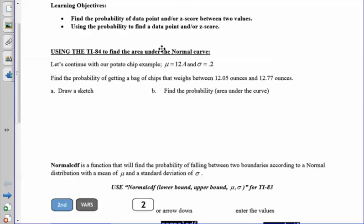Welcome to the unit 9 lesson 4 video. In this video, we're going to look more at the normal distribution curve and at finding the probability of a data point or a z-score between two values. We're also going to be able to work our way backwards, so once we have a probability or an area under the curve, we're going to work our way backwards to find a data point or a specific z-score. We're going to continue with that potato chip example where our mean was 12.4 and our standard deviation was 0.2.